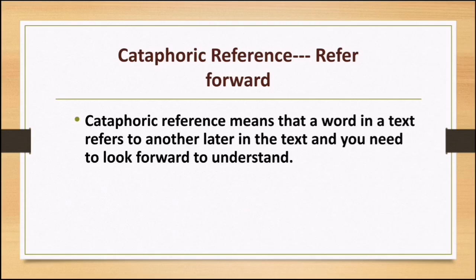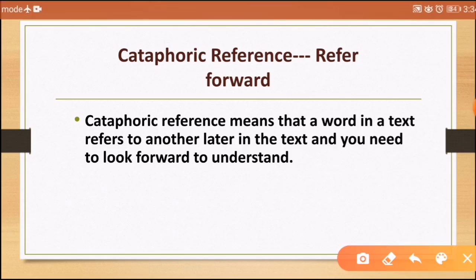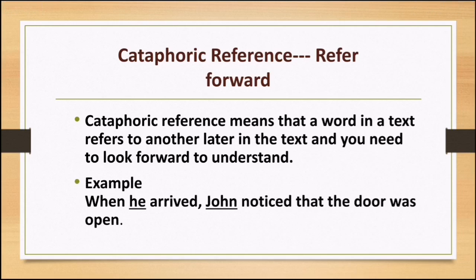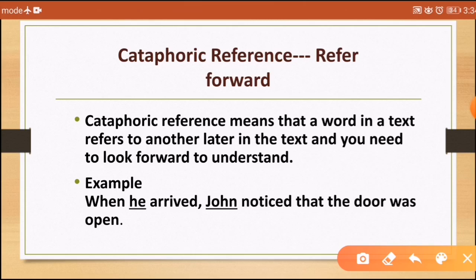Cataphoric reference means that a word in a text refers to another word later in the text, and you need to look forward to understand it. For example: 'When he arrived, John noticed that the door was open.' Now, who arrived? You will read the text forward.